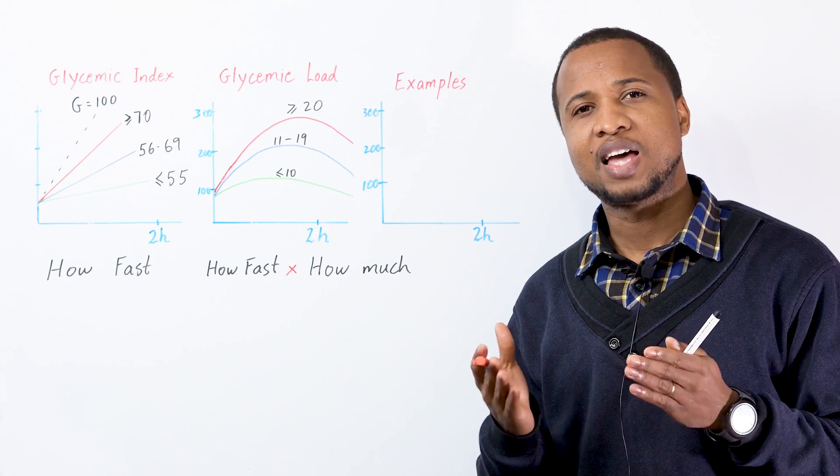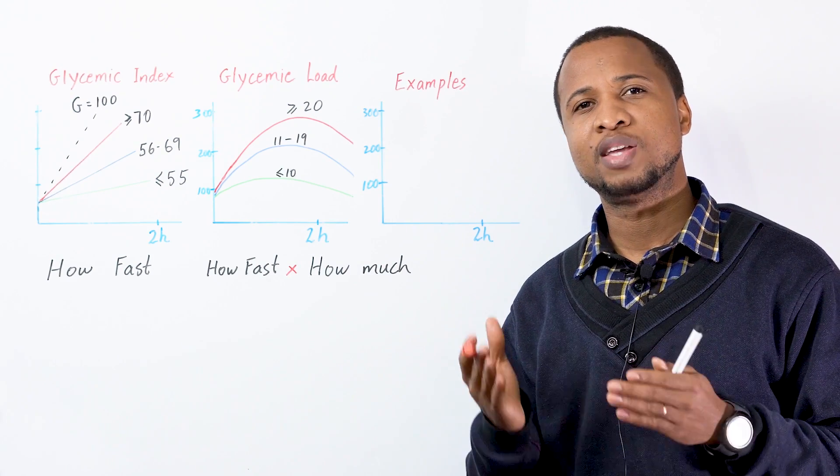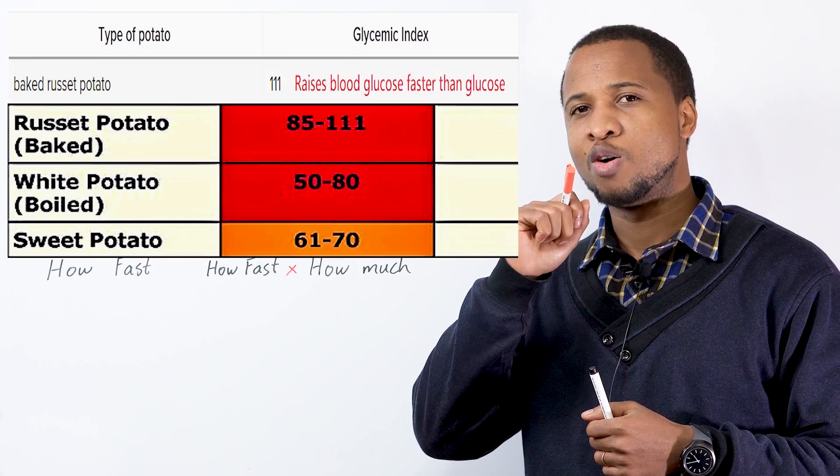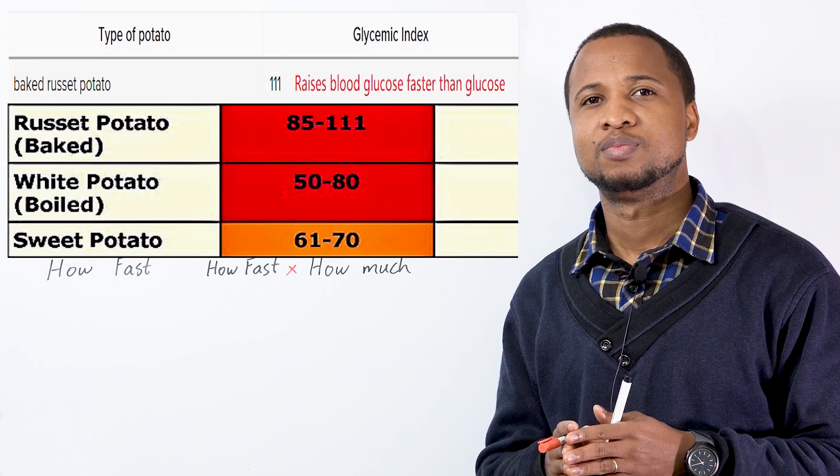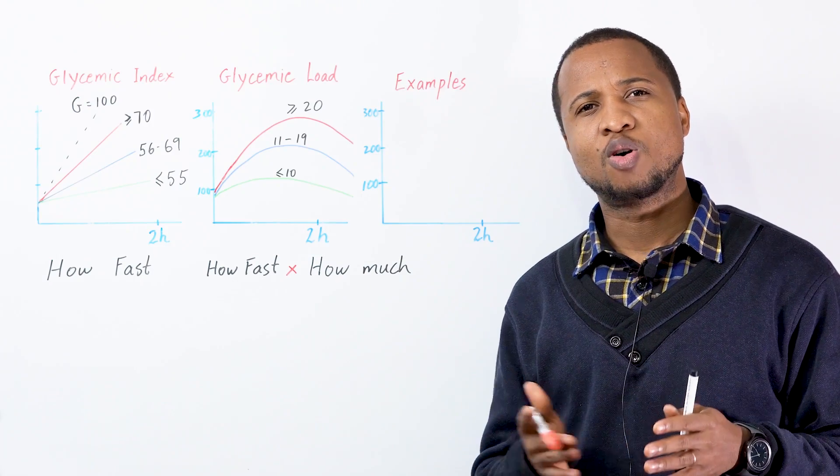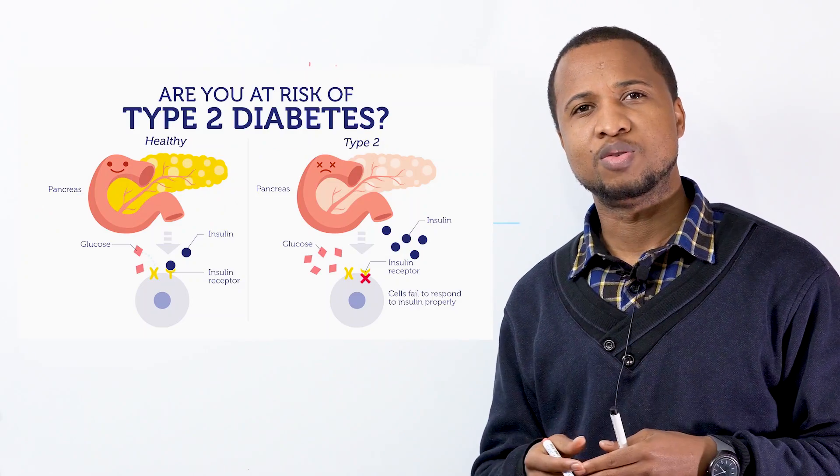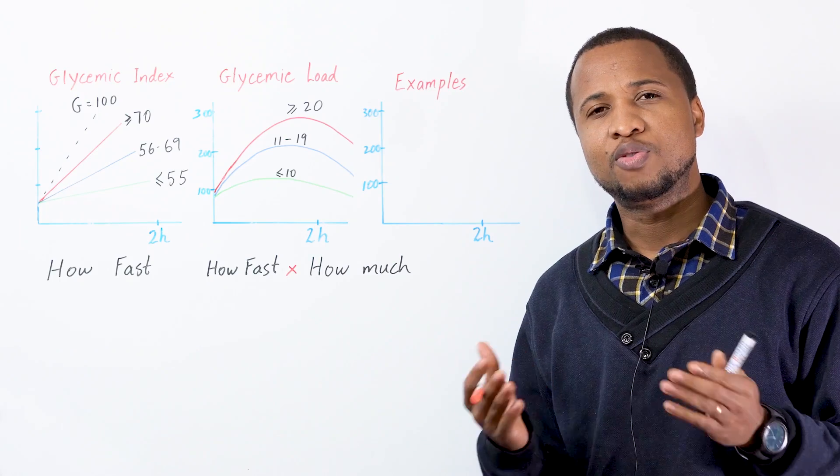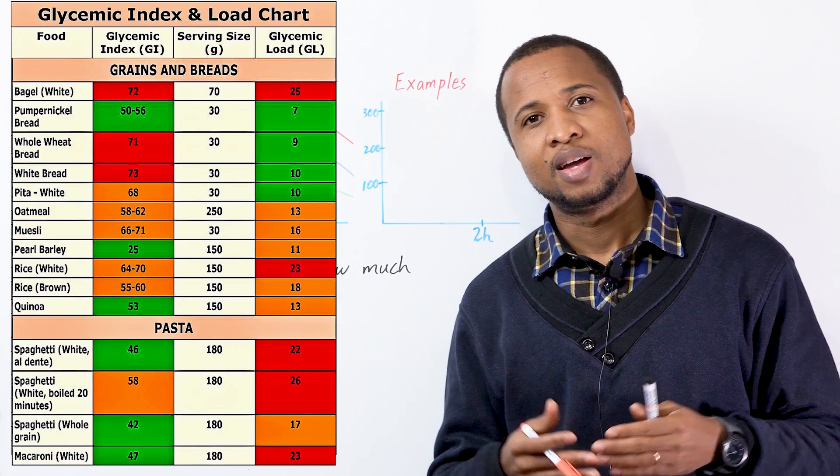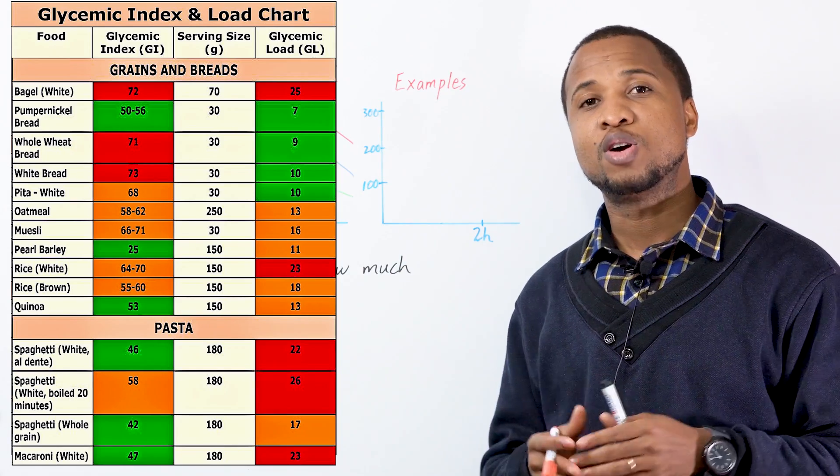And now, pause the video and let's have a minute of silence for all the potato lovers that do not know they have been drinking glucose every single day. I am very sorry for their pancreas. I think we should call it some kind of organ abuse, pancreas abuse. Now, if we look at all the grains and bread, they're almost as bad as potatoes and very close to glucose.